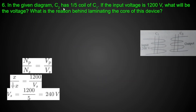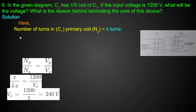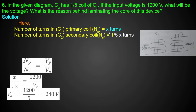The next question: coil C2 has 1/5 the number of turns of coil C1. So C2 is 5 times fewer turns than C1. The input voltage is 1200 volts. Let the number of turns in C1 be x turns, so C1 is the primary coil. C2 is the secondary coil, with Ns equals x divided by 5, that is 1/5 x.